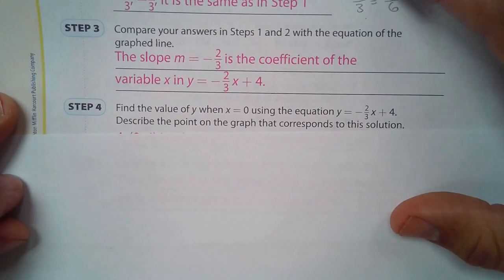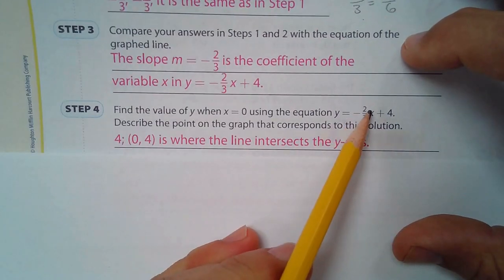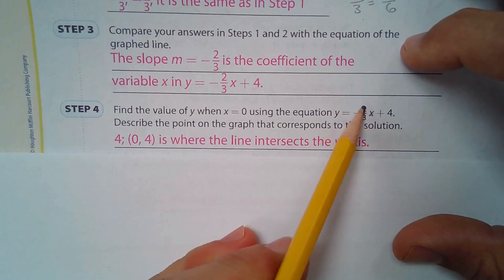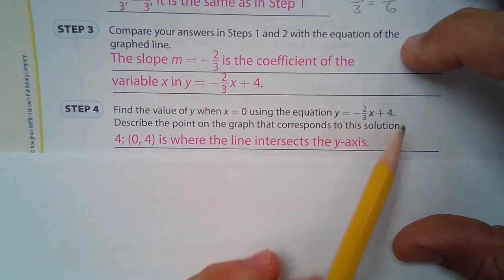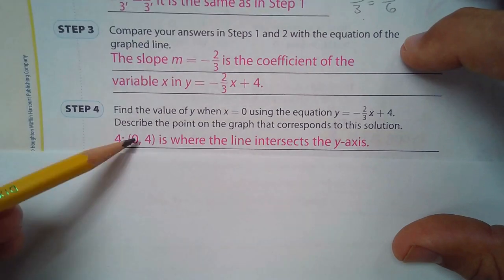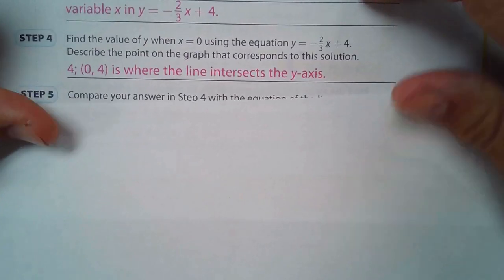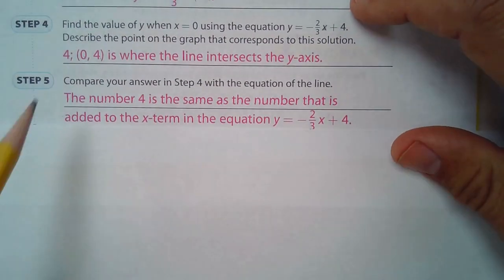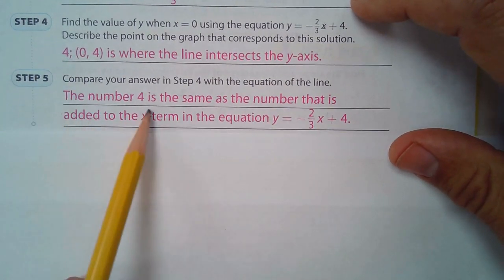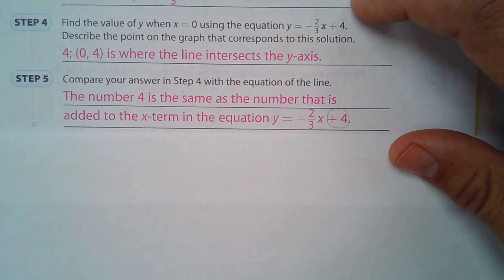Find the value of y when x is zero. So we'll plug in zero for that. Negative two-thirds times zero is zero, so that would be zero. And so y would equal four. And so that's why it's four. Zero, four is where the line intersects the y-axis. That's the y-intercept right there. And we're going to come across some important discoveries here.